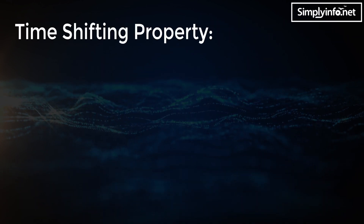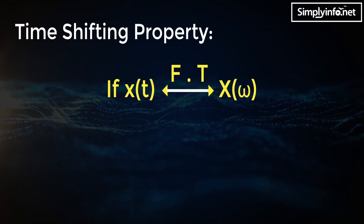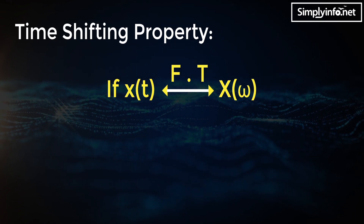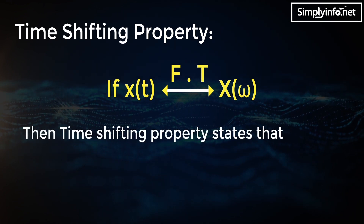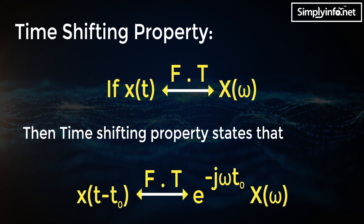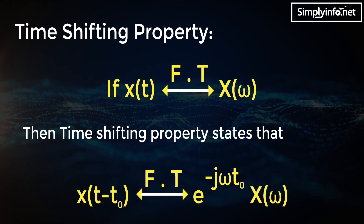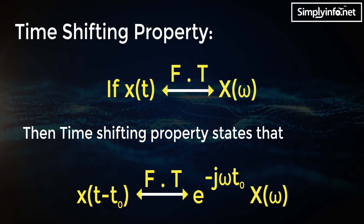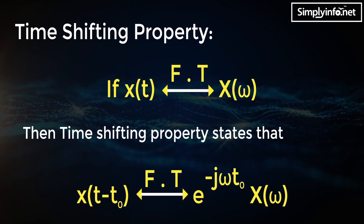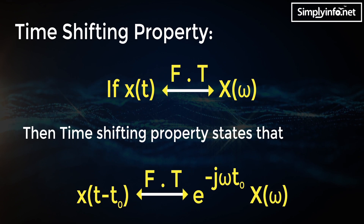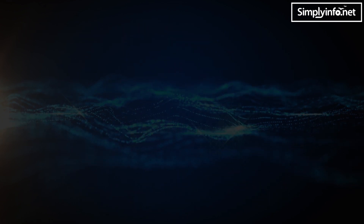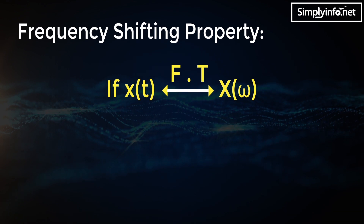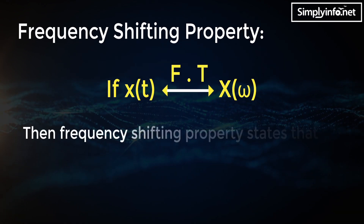Time shifting property: if Fourier transform of x(t) is X(ω), then the time shifting property states that Fourier transform of x(t − t₀) is equal to e^(−jωt₀) · X(ω).